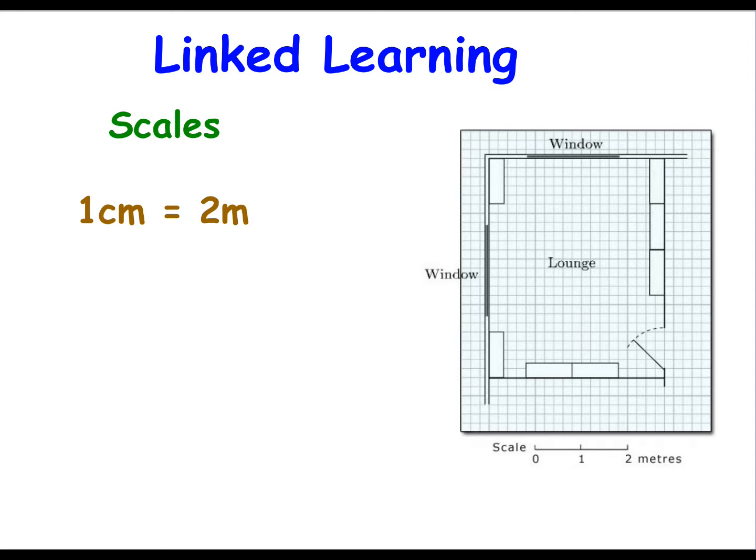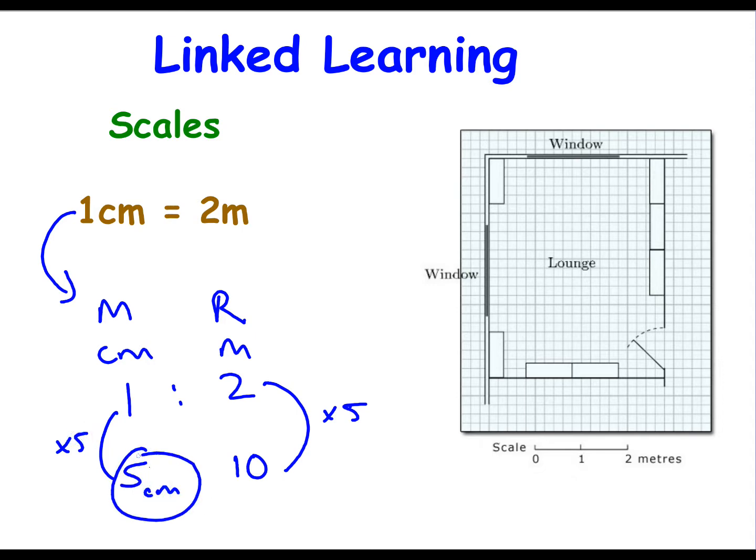The linked learning links back to our scales lesson where we showed you that whenever you're given a scale for a drawing, it relates the drawing or the map to the real world and there's a relationship that we write as a ratio. So there's one centimeter to every two meters. So if we're putting something onto the drawing then it comes from the real world, for example 10 meters, so we multiply by 5, and it allows us to work out what we need to draw on the drawing.